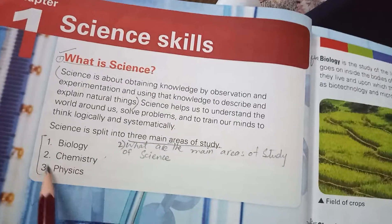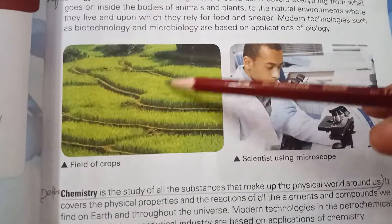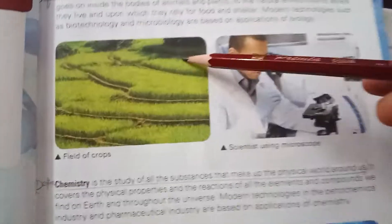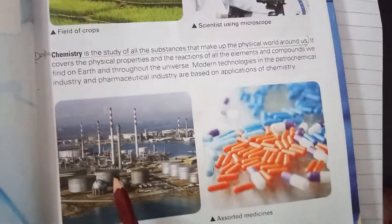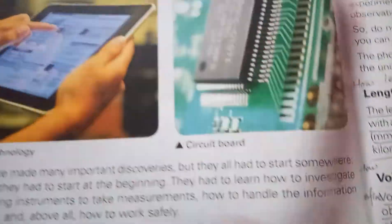There are three main branches of science: biology, chemistry, and physics. Biology is related to living things — plants, animals, birds, and human beings. Chemistry is the study of chemicals and substances. Physics is the branch that deals with measuring things and the study of physical things around us.